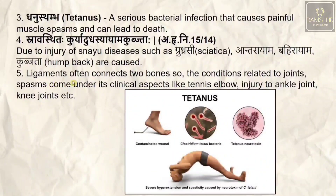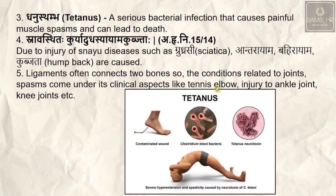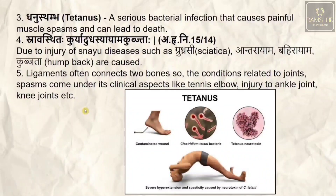Ligaments connect two bones, so conditions related to joint spasm are also clinical aspects of snayu — such as tennis elbow, or injury to the ankle joint and knee joint. With this, we conclude the topic of snayu sharira. Thank you.